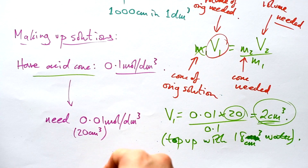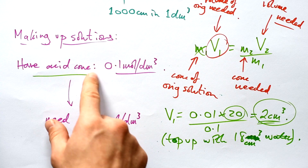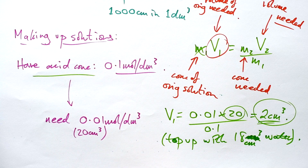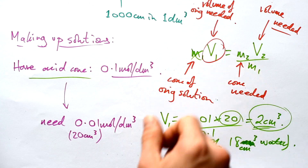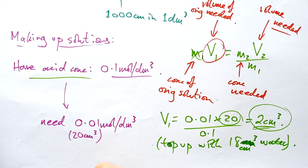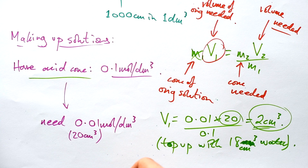Naturally, you can only make solutions that are less concentrated than the original — you can't make a more concentrated solution by diluting it. So there you go: M1V1 = M2V2, a very nifty equation to remember for your exams. Hope you found that helpful — if you did, leave a like; any questions or comments, leave them below, and I'll see you next time.